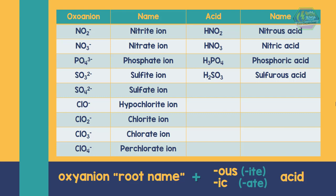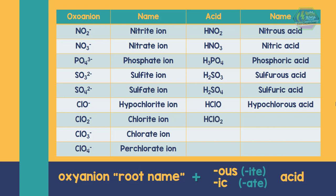For the sulfate ion, the formula of the acid would be H₂SO₄, and its name is sulfuric acid. For the hypochlorite ion, the formula of the acid would be HClO, and its name is hypochlorous acid.